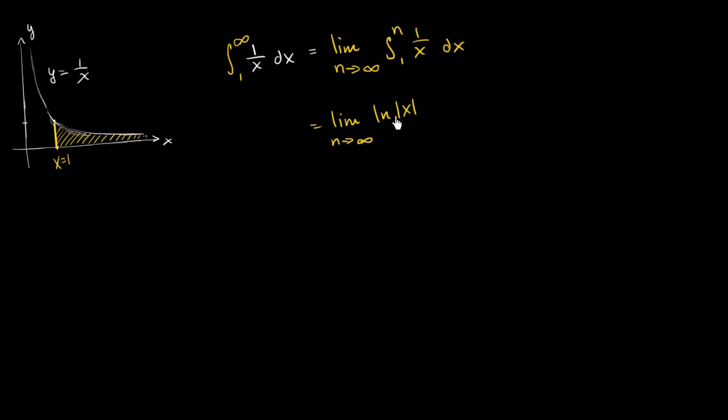And the absolute value of x won't really matter so much. We could just say x because we're dealing with positive values of x. But I'll just write down as the natural log of the absolute value of x between x is 1 and x is n. And so this is going to be equal to the limit as n approaches infinity of.